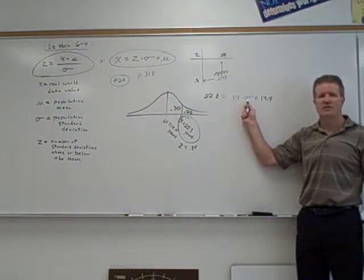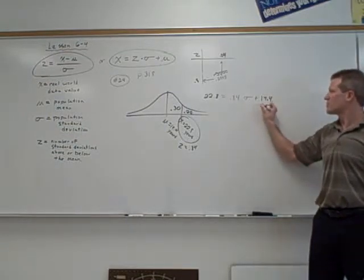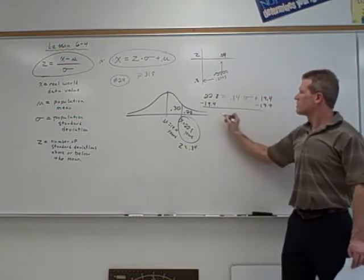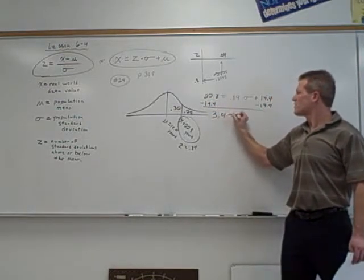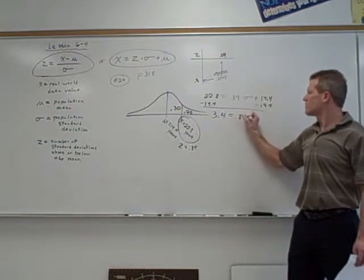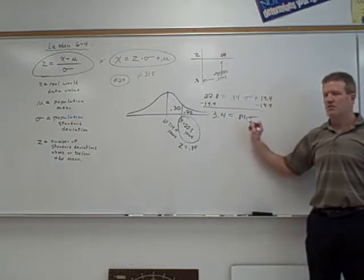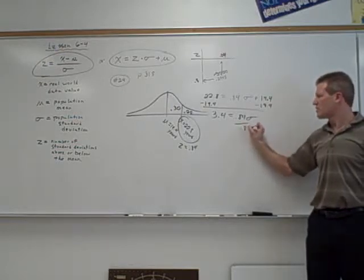What do I do to solve for that? Right, use algebra. Subtract 19.4 on both sides. So that gives you 3.4 equals 0.84 times your standard deviation. And divide by 0.84 on both sides, and you'll have your answer.